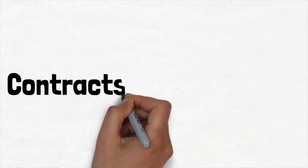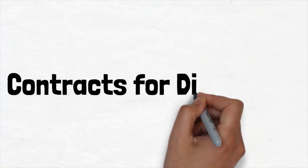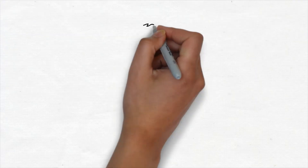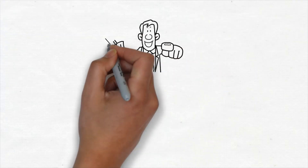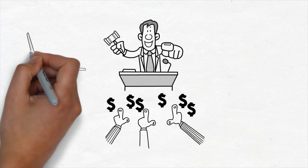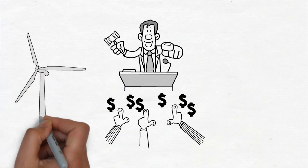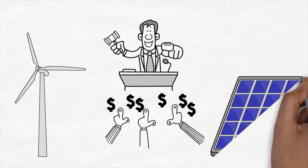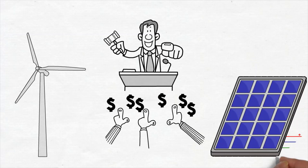This video looks at the Contracts for Difference Auctions in Great Britain: what it is, why it is used, and how it works. The Contracts for Difference, or CFD as it is more commonly termed, is an auction where developers of renewable generation — such as onshore wind farms, offshore wind farms, and solar farms — bid into an auction with the aim of winning a 15-year contract that will guarantee a standard rate of payment for the electricity they produce.